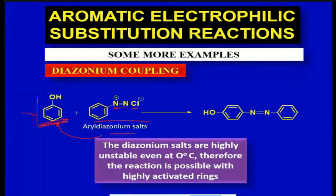Even at low temperature, highly activated or reactive benzene rings or aromatic rings can undergo aromatic electrophilic substitution reaction. Because of the unstable diazonium salts, you have to perform the reaction at low temperature.